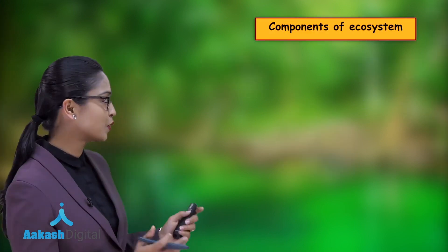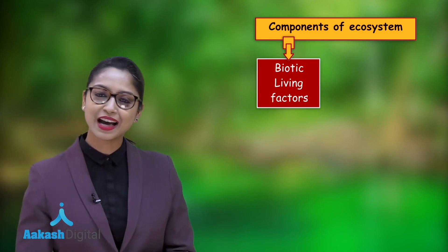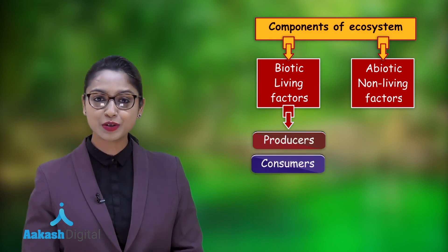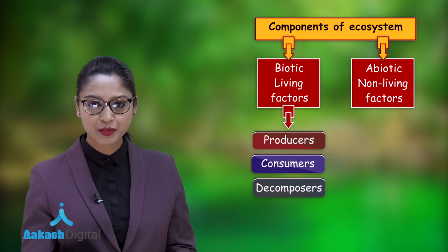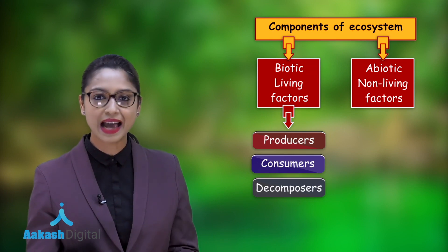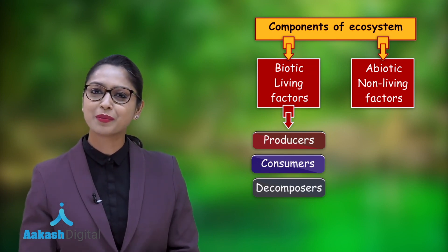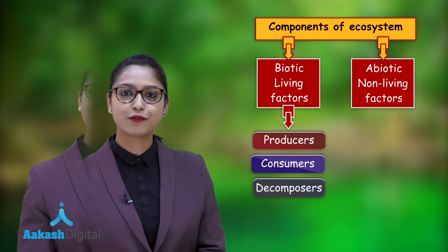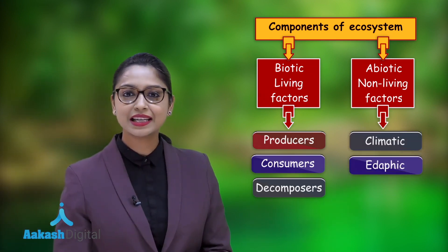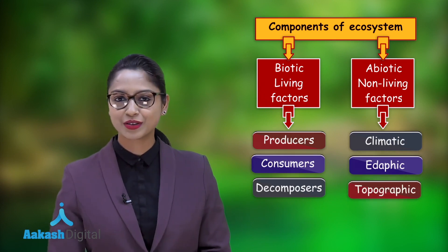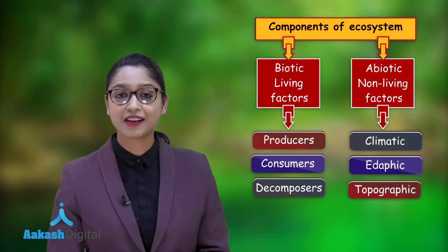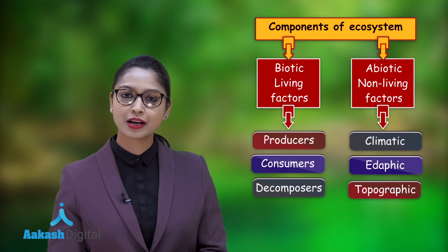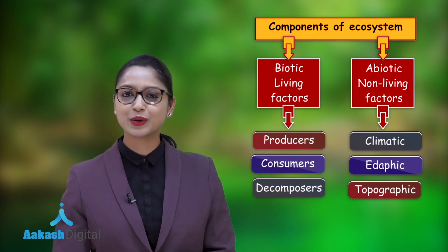Now let's move on to the components of ecosystem. We have biotic as well as abiotic components. Under biotic, we have producers, consumers, and decomposers. Producers means plants, consumers means mainly animals, and decomposers are mainly bacteria and fungi. Abiotic components include climate, edaphic factors, and topographical factors. Edaphic factor means soil-related, and topography means the surface configuration — whether the area is hilly, plain, or sloped.